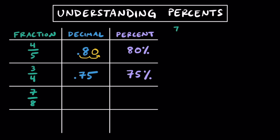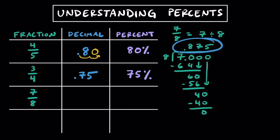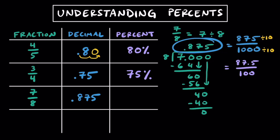Now let's look at the fraction 7 eighths. 7 eighths is really 7 divided by 8, and if we complete the long division, we find out that this is going to equal 0.875. More properly we can read it as 875 thousandths based on its place value. While we currently have a ratio of per 1000, we can divide top and bottom by 10 to get a new ratio of 87.5 per 100, which is just 87.5%. Keep in mind that we will never write a percentage sign in a decimal.